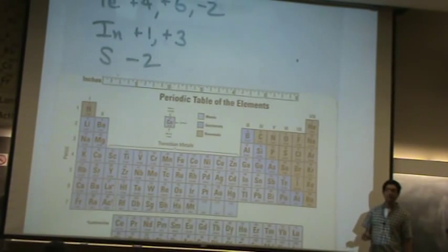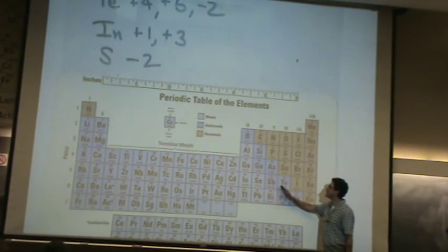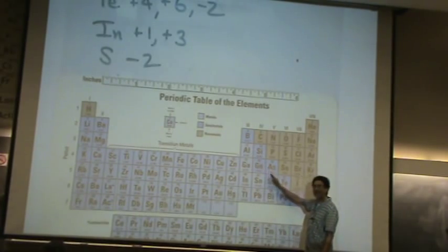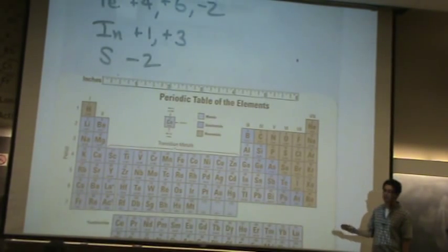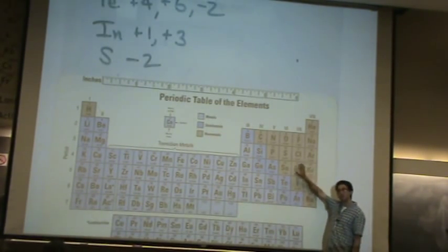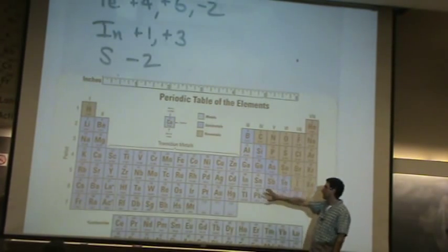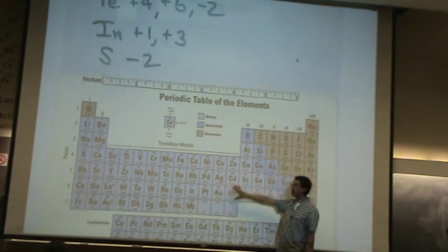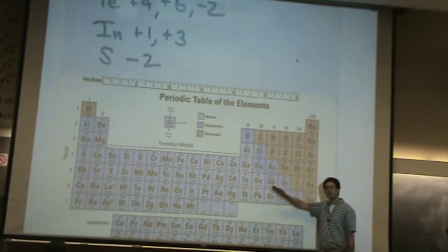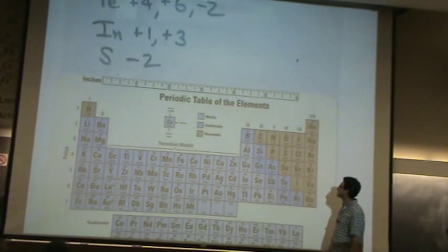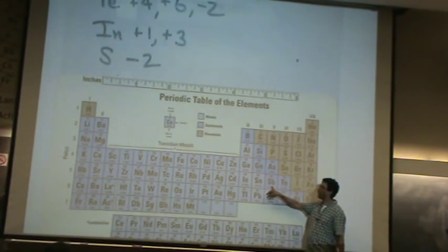Now, some of them also have a negative. That's only if it's a semi-metal that is on the staircase could have a negative charge. Because non-metals are the only ones that have negative charges. The metals only have positive charges. Semimetals split the difference. They are ambi. They go both ways.